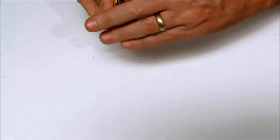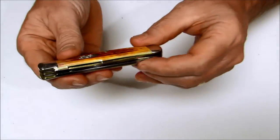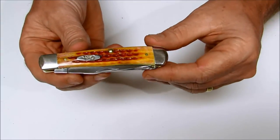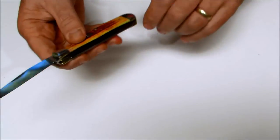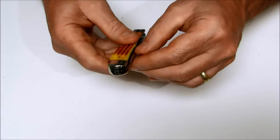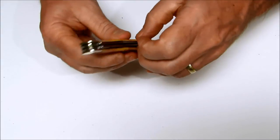The item number again is 7401. The pattern is 6254 SS. It's a non-locking slip joint and it has the clip and the spay blade.